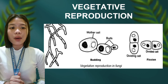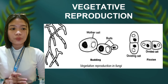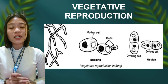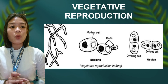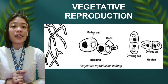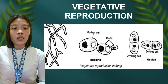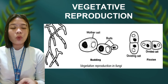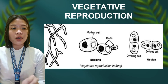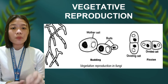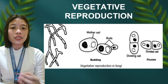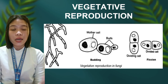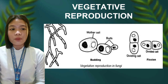When we talk about budding, the process starts with cell division occurring at one particular site of the parent fungus, leading to the formation of an outgrowth at that site. When that bud or outgrowth is matured enough, it detaches from the parent and will grow independently.